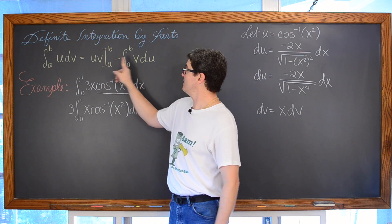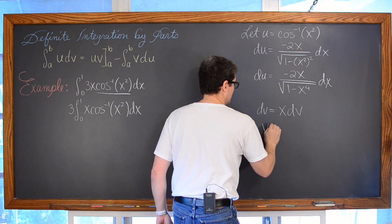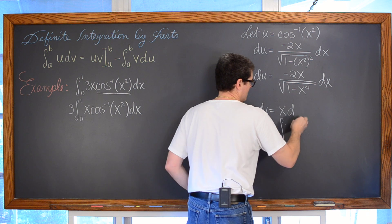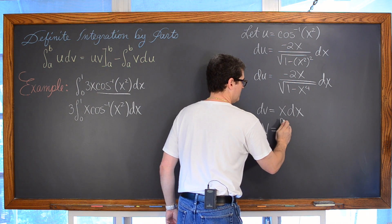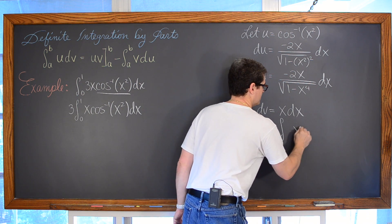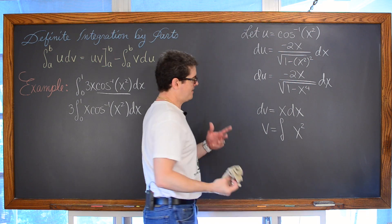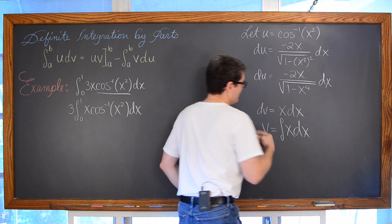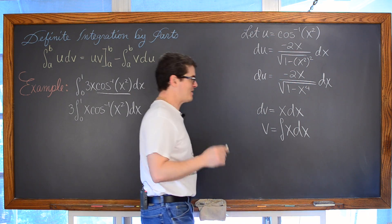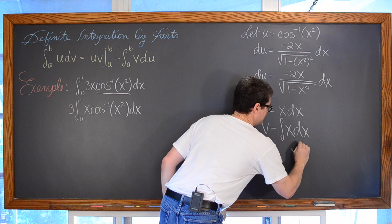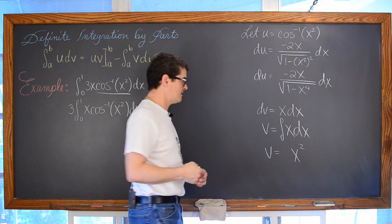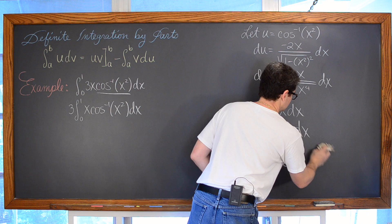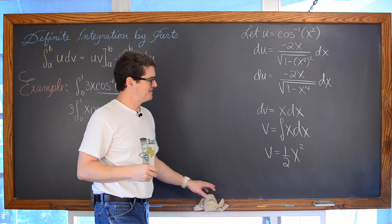To figure out what v is going to be, I just integrate dv. So v is equal to the indefinite integral of x dx. We raise that power by 1 and divide by the raised power, giving us v equal to one half x squared.